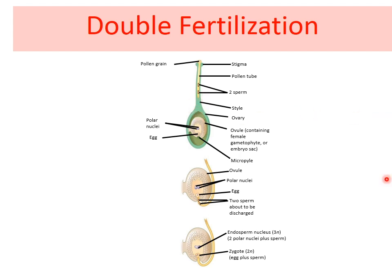As it travels through the style to reach the embryo sac, the pollen tube's growth is supported by the tissue of the style. During this process, if the generative cell has not already split into two cells, it is now divided into two sperm cells. The pollen tube is guided by chemicals secreted by the synergids present in the embryo sac.